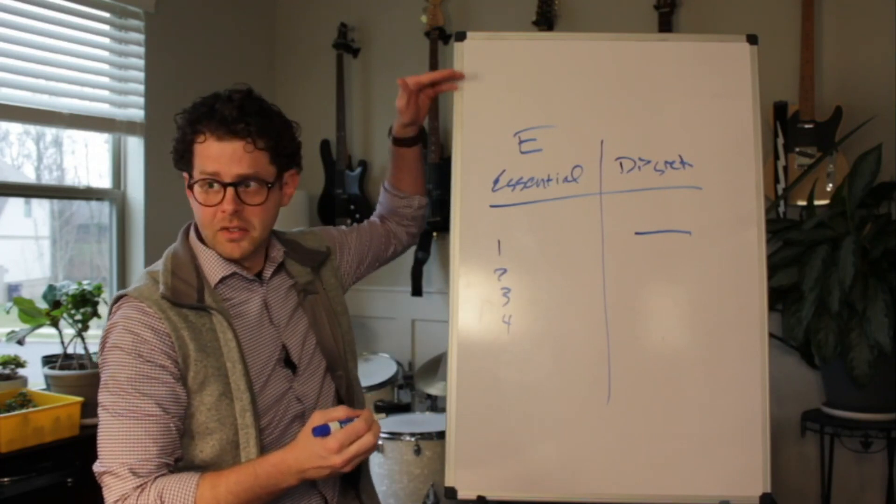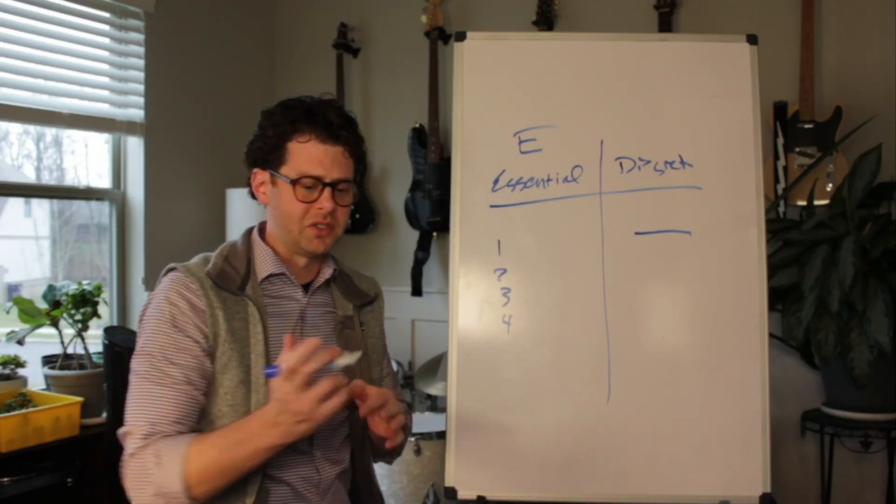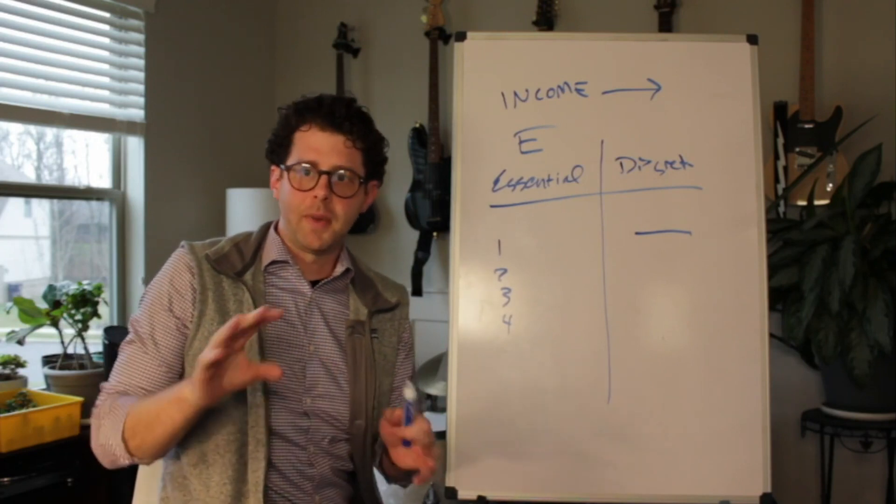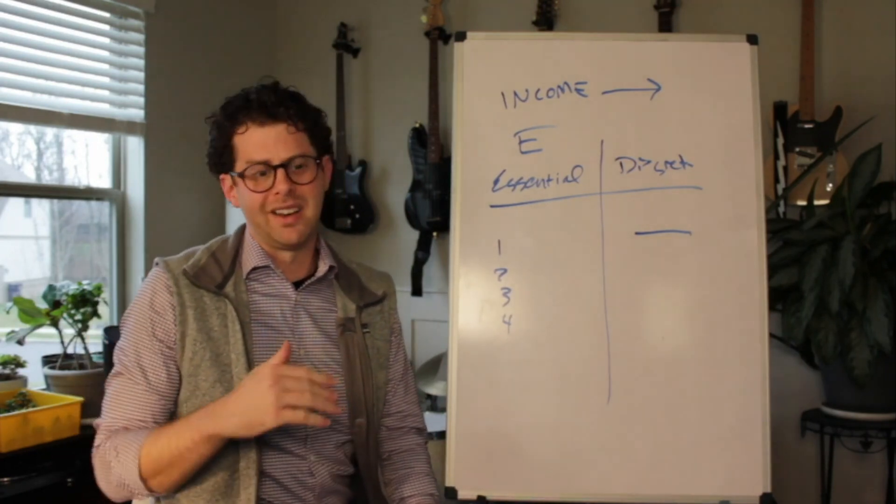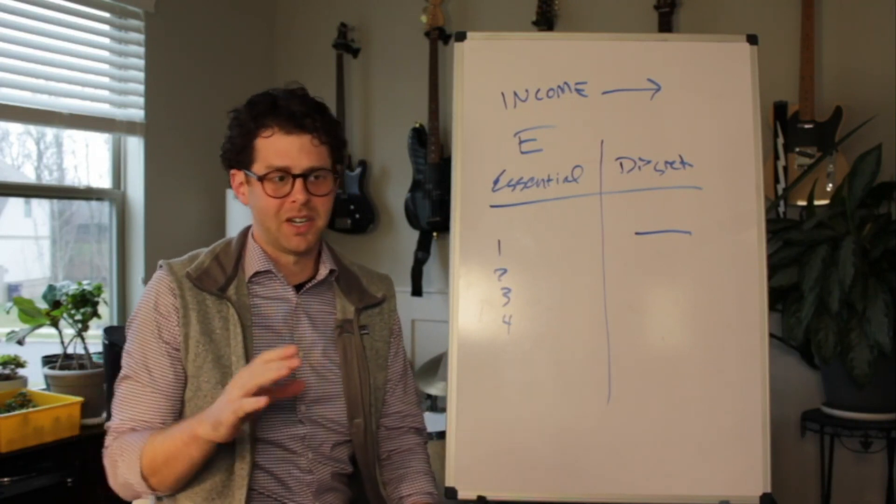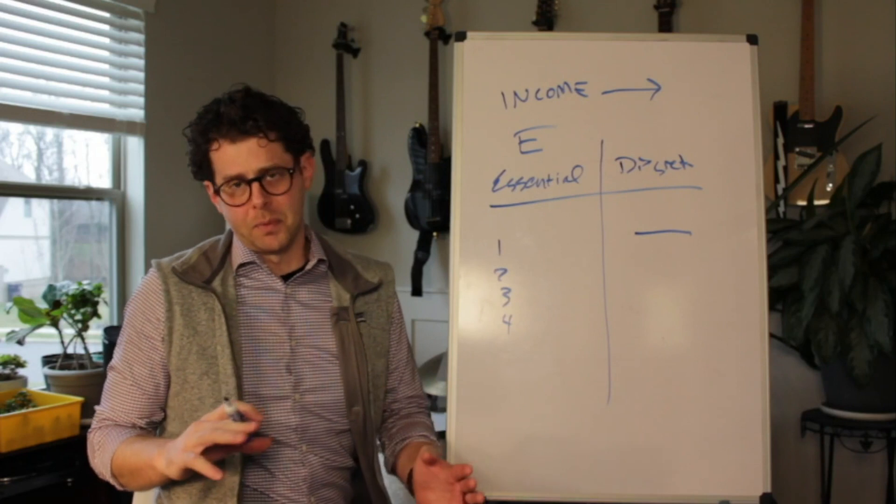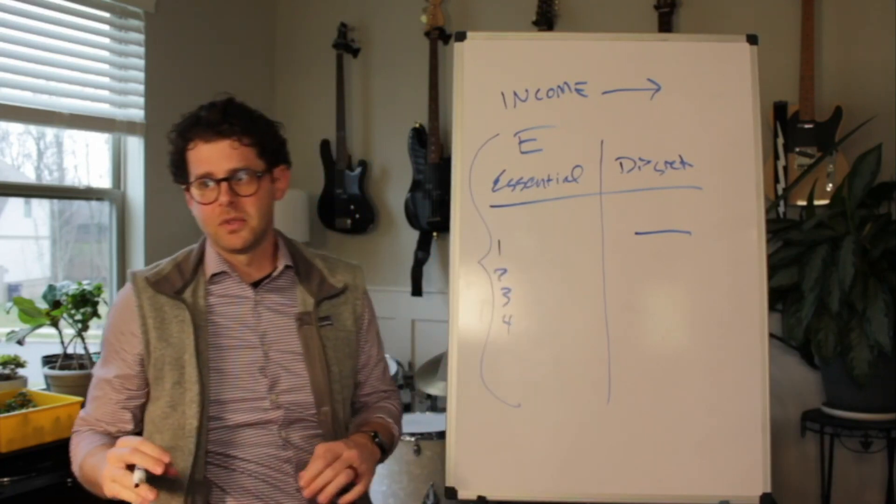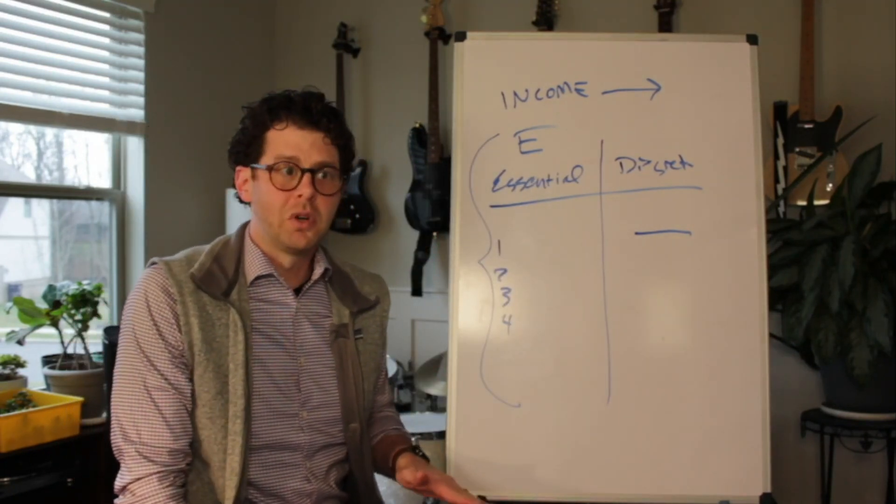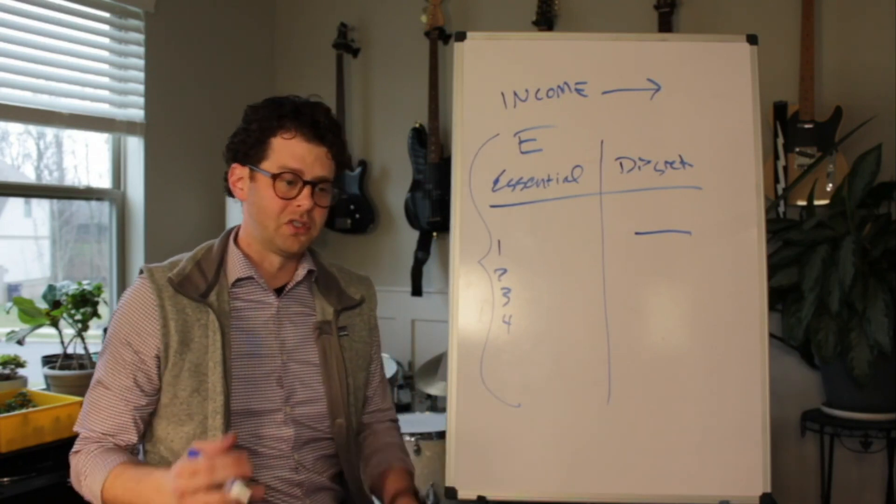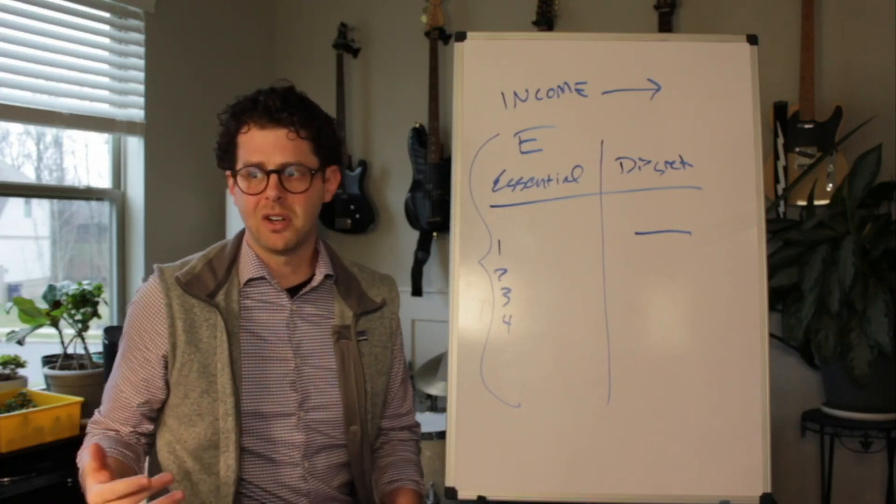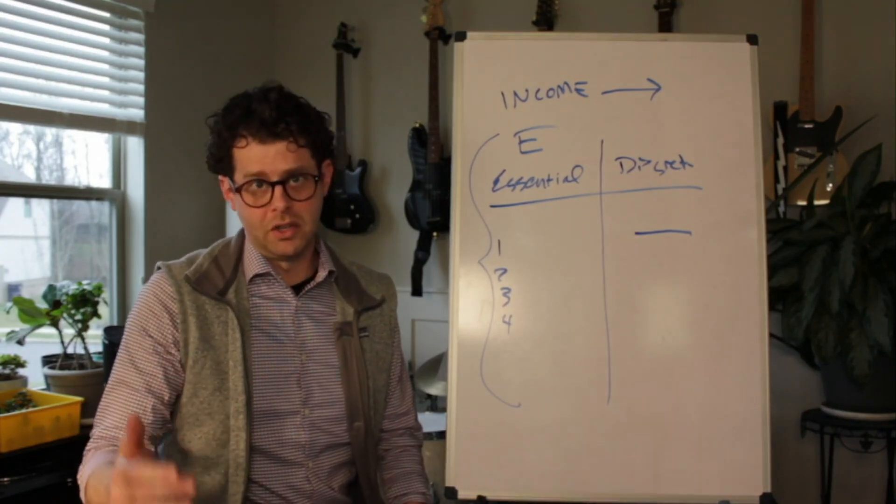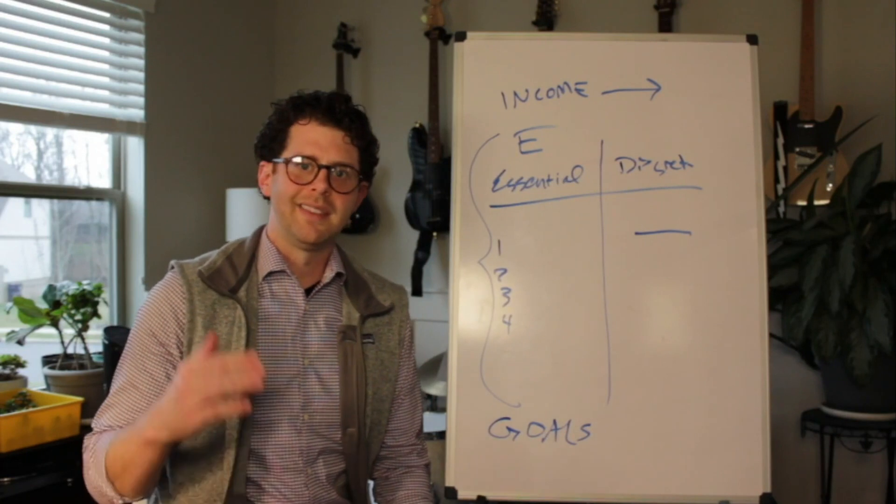You'll notice I left some space at the top and bottom. At the top, you list your income—not just your paycheck but any other nickels and dimes you pick up, even if you sell a T-shirt on Facebook Marketplace for $5. At the bottom, the net result is your long-term goals. Especially if you're starting out budgeting, your goal may be to make it to the end of the month without spending more than you made.